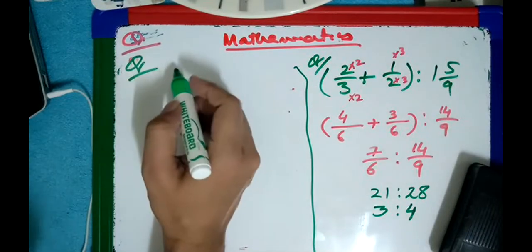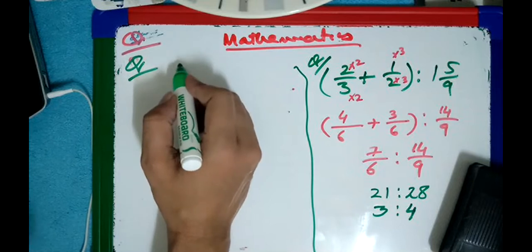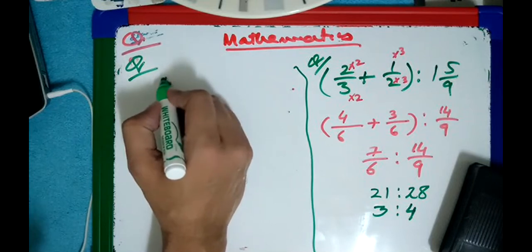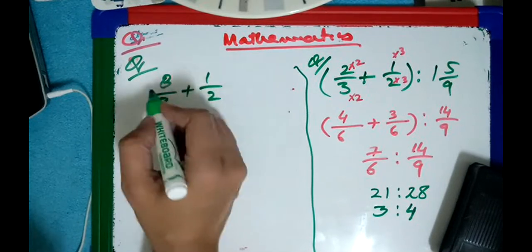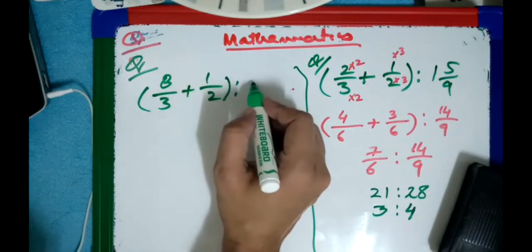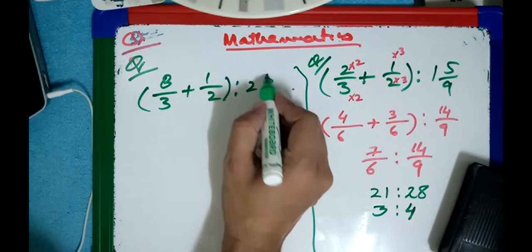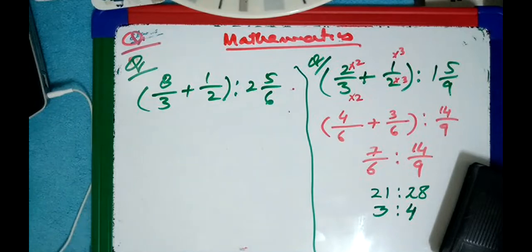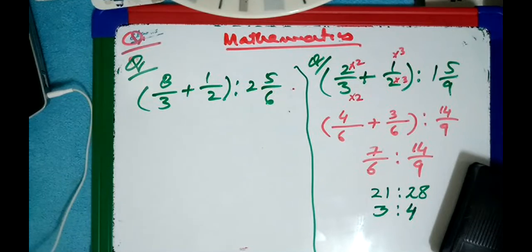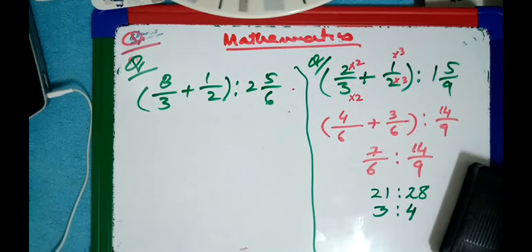Next thing — I will give you another one. I hope you will do it now. This is: 8 whole 8 over 3 plus 1 over 2, ratio 2 whole 5 over 6. Try this. It's the same — first solve the bracket, make one fraction, and the right side also as one improper fraction. The next step will be similar to the previous question.